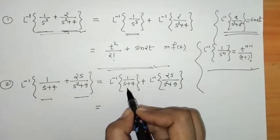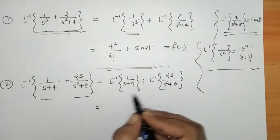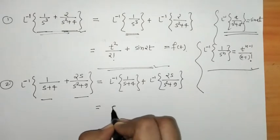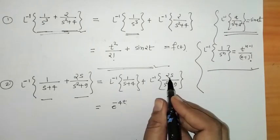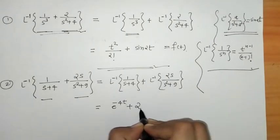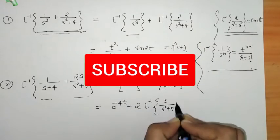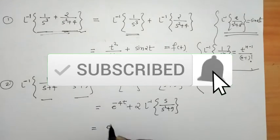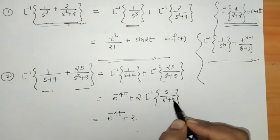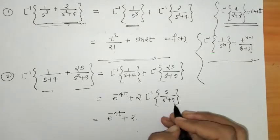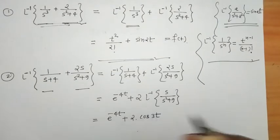Using the elementary Laplace inverse formula, L⁻¹{1/(s+4)} = e^(−4t). For the second term, we take 2 outside: 2·L⁻¹{s/(s²+9)}. Using the standard formula L⁻¹{s/(s²+a²)} = cos(at), we get 2·cos(3t).